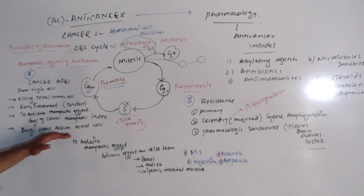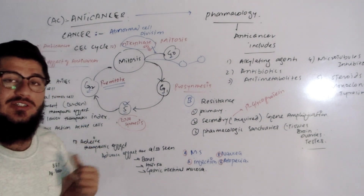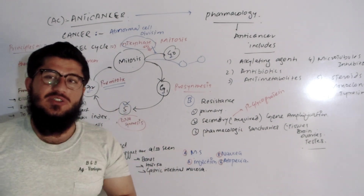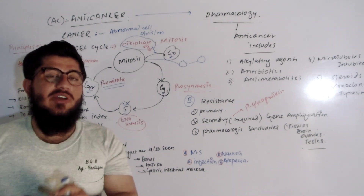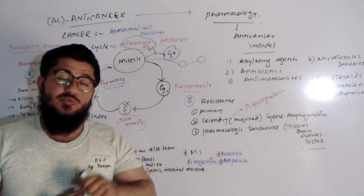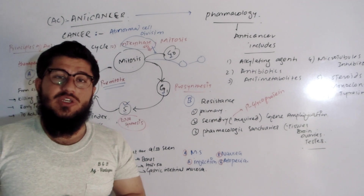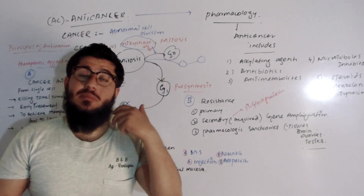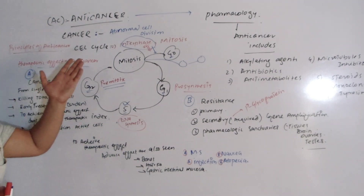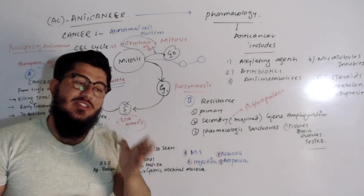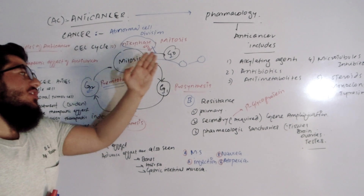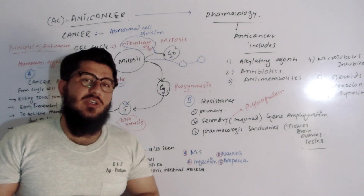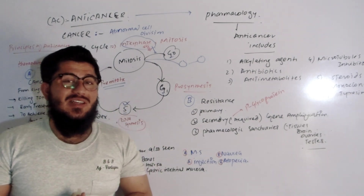Anti-cancer drugs show their action on actively dividing cells — they affect cells that are in the process of division. Anti-cancer drugs also act on normal dividing cells, which is a very well-known fact about these medications. The sites of action in the cell cycle are G1, S phase, G2, and G0 phase. G0 is an important phase — details of drug actions at these specific sites will be covered in the next videos.